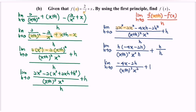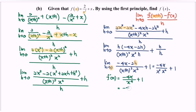Kindly substitute the value of h equal to 0 into this part — the 2h becomes 0. So finally, negative 4x over x squared multiplied with x squared plus 1. Rewriting, f prime x equals negative 4x over x to the power of 4, plus 1, which equals negative 4 over x to the power of 3 plus 1. Or you may express your answer as f prime x equals negative 4 plus x cubed, over x cubed.